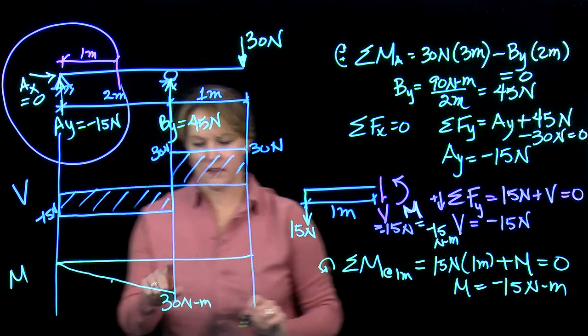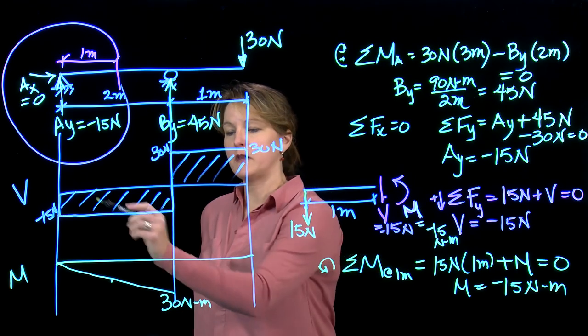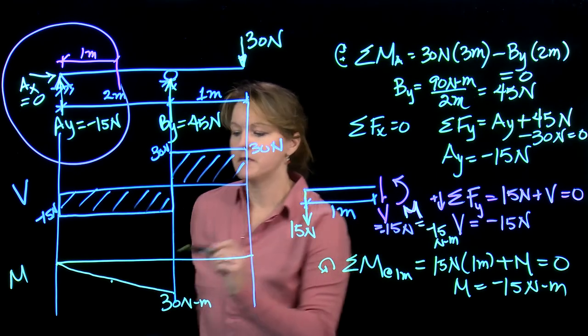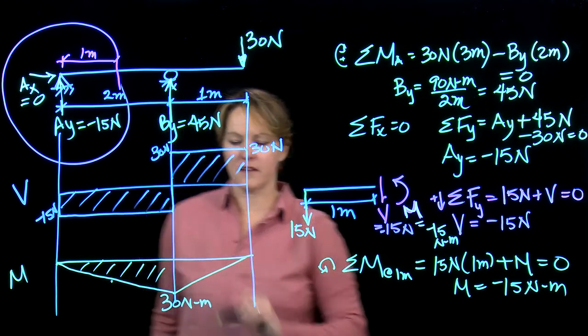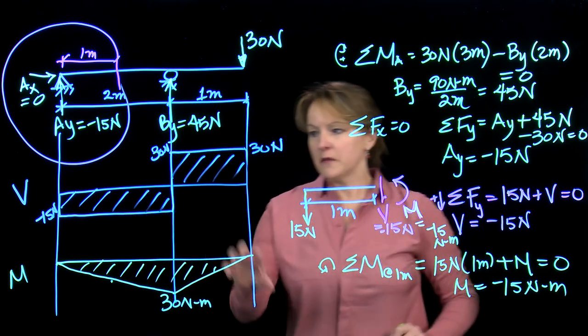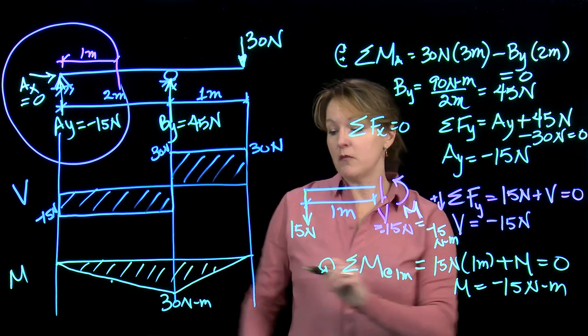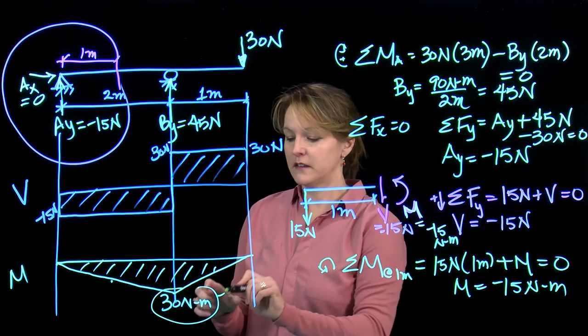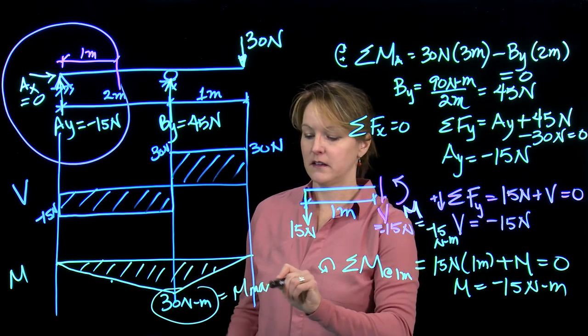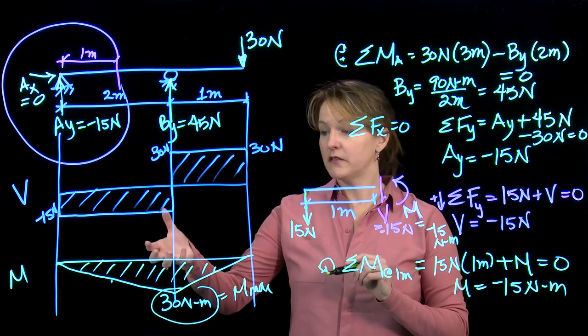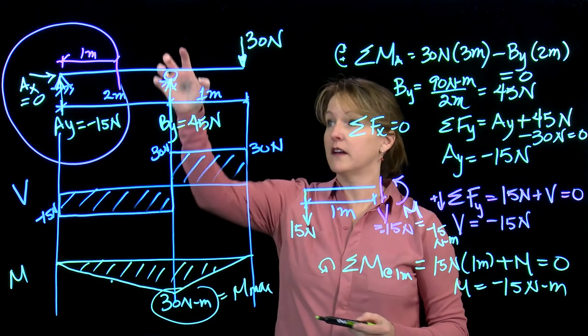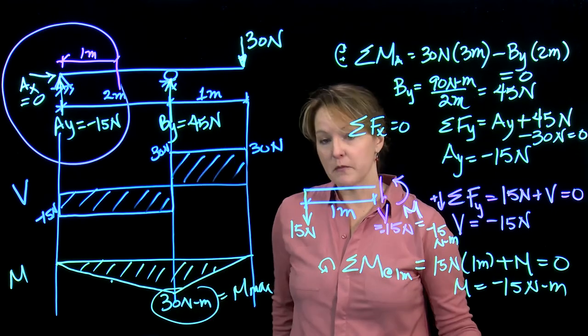That's 30 newton meters. I actually calculate that by looking at the area under the shear diagram—you don't have to know how to do that. But then this diagram tells me the maximum moment is 30 newton meters. So this is my M max, and it's located in the beam right above that support. So if I'm worried about a bending failure, that's where I would be looking. That's where I'd design my beam for that maximum moment.